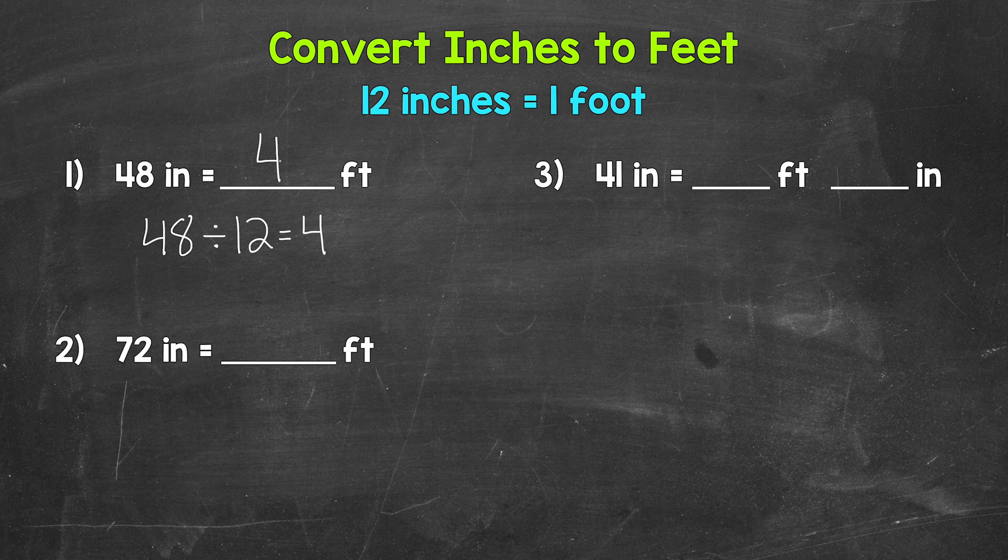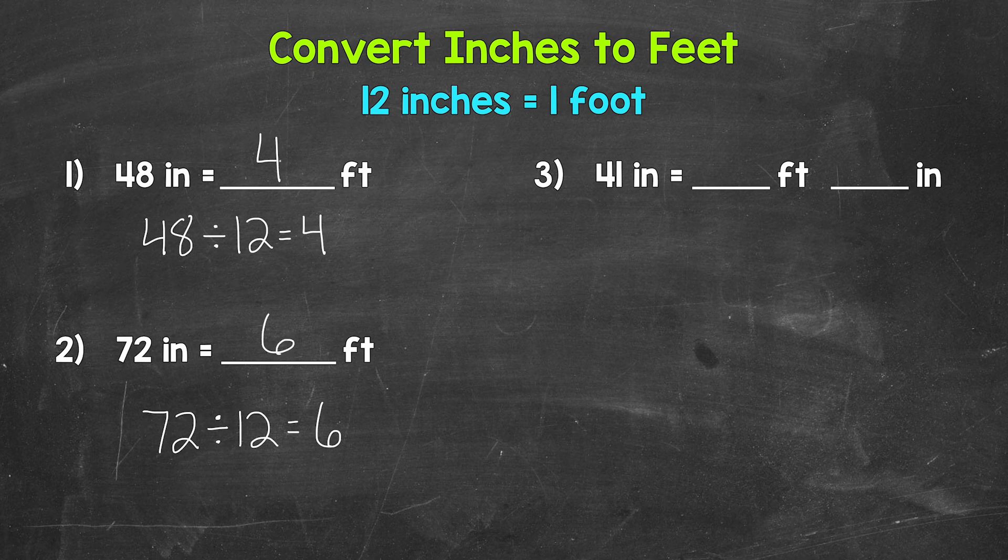So when we go from inches to feet, we divide by 12. Let's move on to number 2 where we have 72 inches. So how many groups of 12 inches here, how many feet does 72 inches equal? So we need to do 72 divided by 12. 72 divided by 12 gives us 6. 72 inches equals 6 feet.